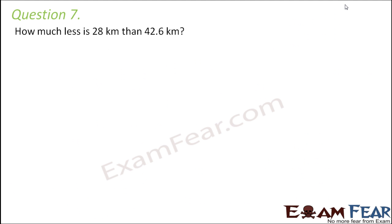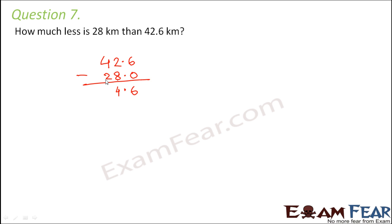Question number 7: how much less is 28 km than 42.6 km? We find their difference. 42.6 is bigger, so we write 42.6 and subtract 28, which is 28.0. Subtracting: 6 minus 0 is 6. At the next column, 2 is smaller than 8 so we borrow, making it 12 minus 8 equals 4. Since we borrowed 1, the hundreds digit becomes 3, so 4 minus 3 equals 1. The difference is 14.6 km.